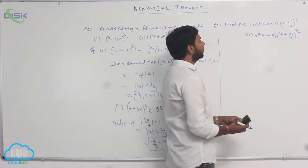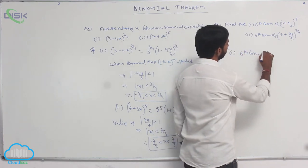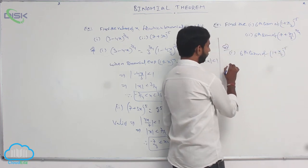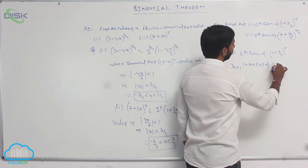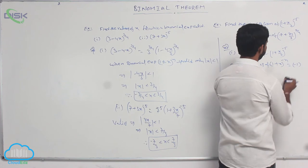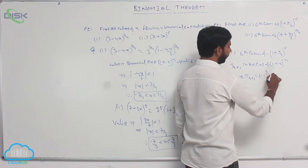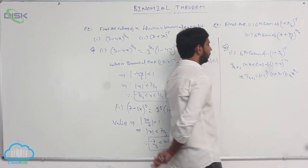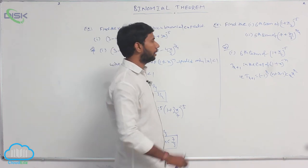Find the 6th term in the expansion of (1 + x/2)^(−5). The general term T(r+1) in the expansion of (1 + x)^(−n) is equal to (−1)^r into C(n+r−1, r) into x^r.